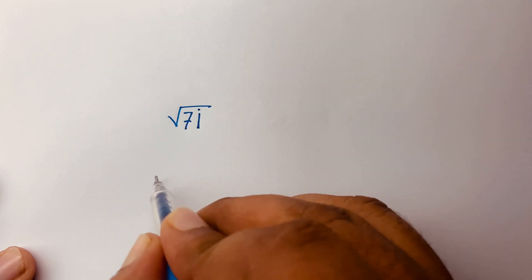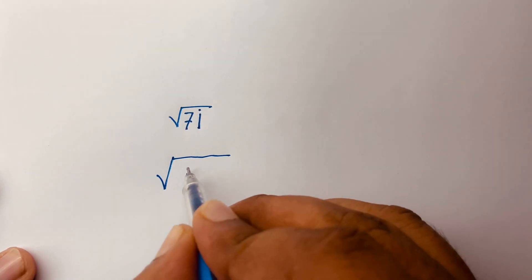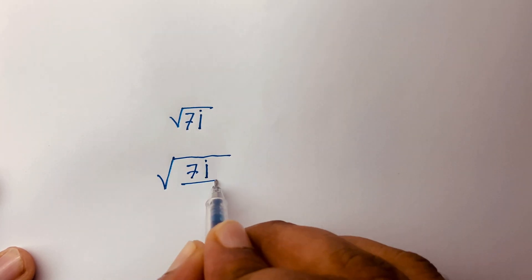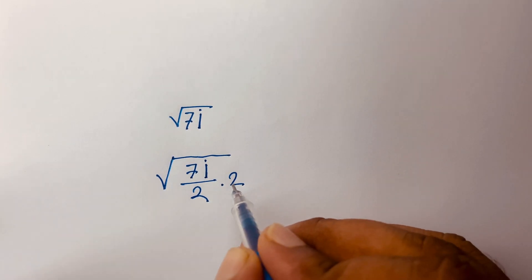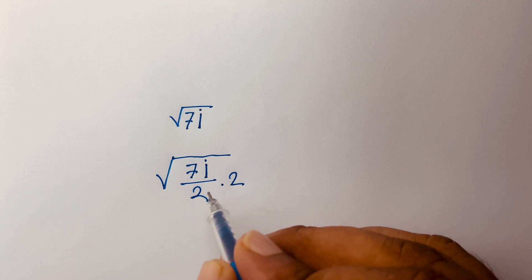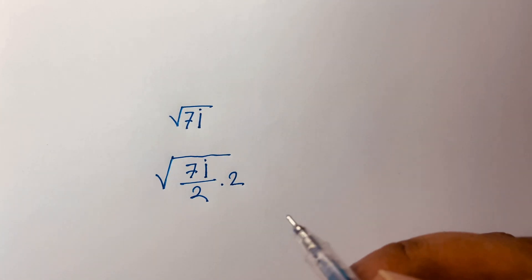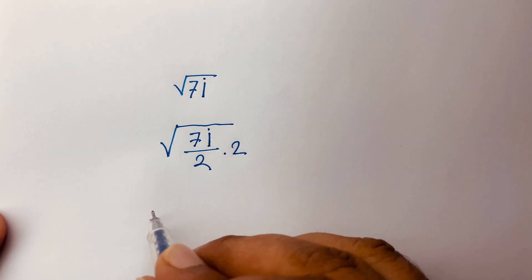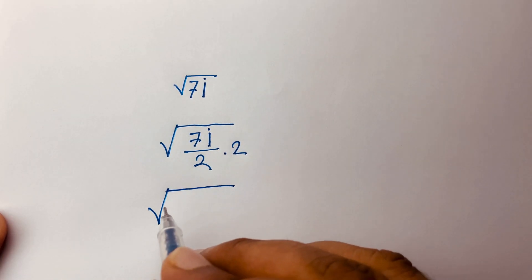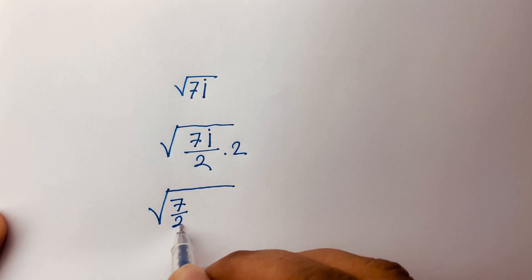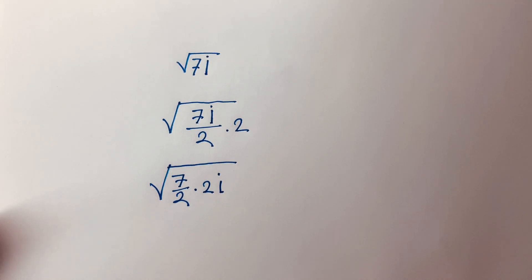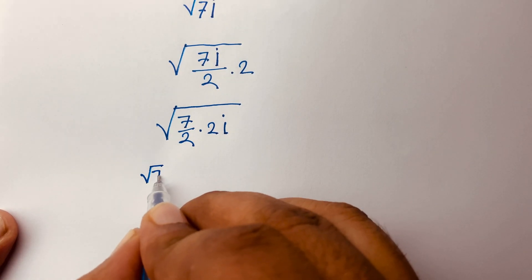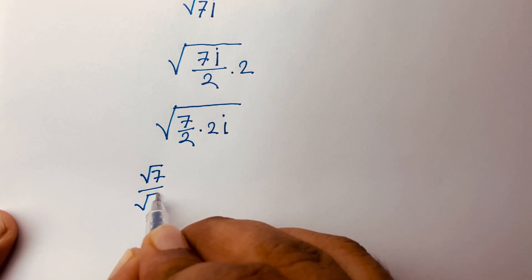Square root of 7i is equal to what? First, I can say square root of 7i — I divide by 2 and multiply by 2, so if I cancel the 2s we get back the previous line. Then I can say it will be square root of 7 over 2, times 2i.